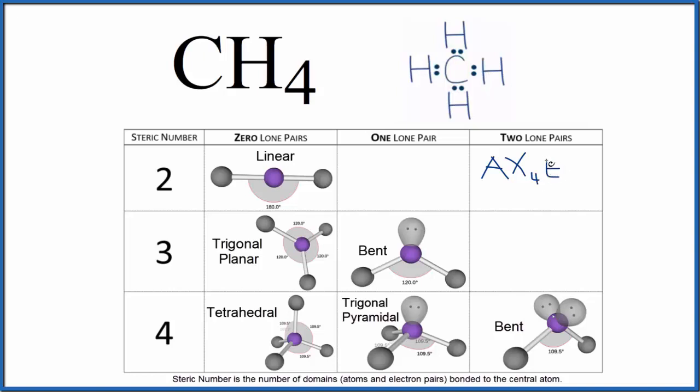We said we don't have any lone pairs, so we'd say zero or we just wouldn't write it. And if you memorized AX4, that's tetrahedral, or if you're allowed you could look that up and see that it's tetrahedral. Bond angle 109.5.